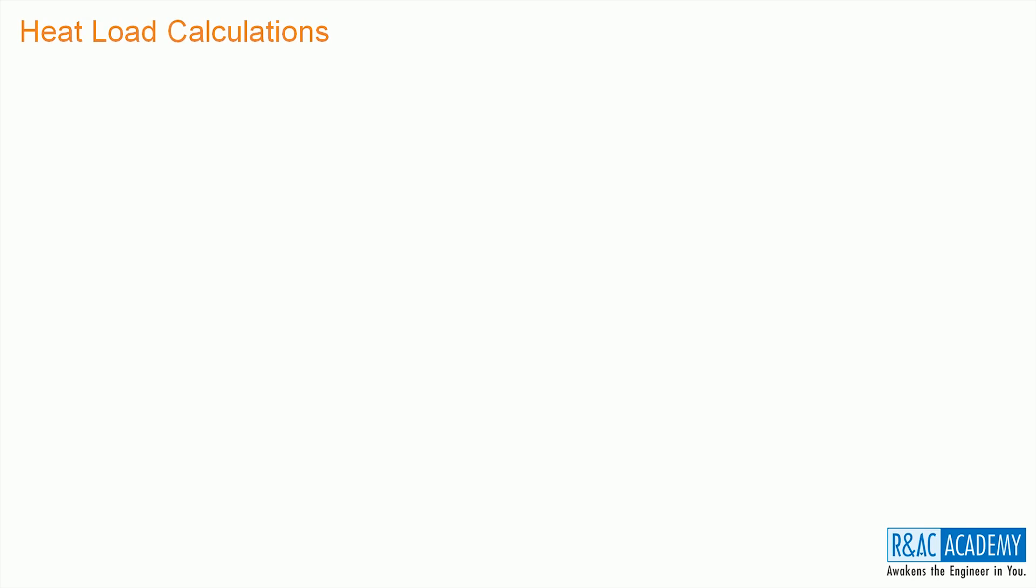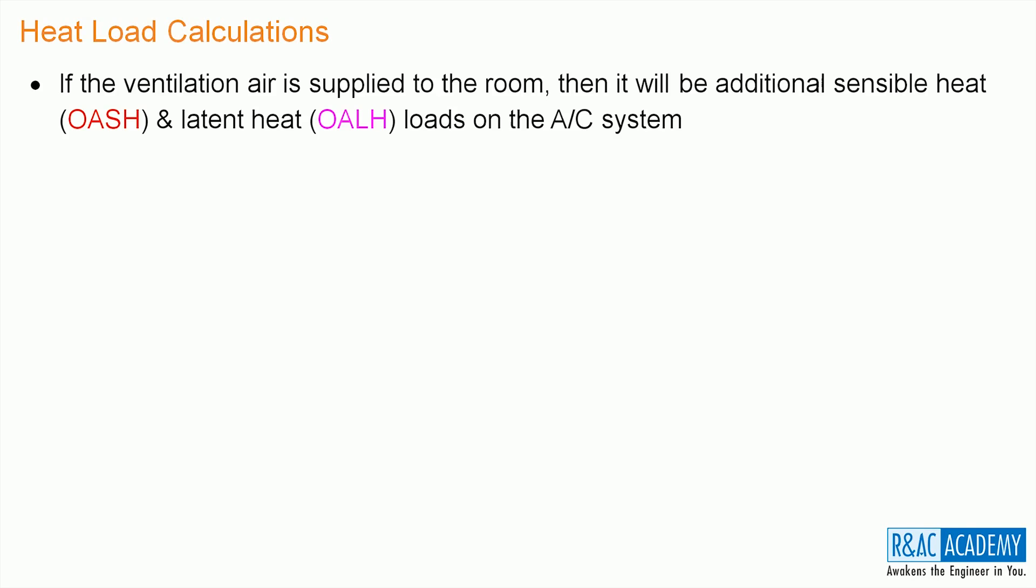Whenever we are taking the outside air or ambient air for ventilation purposes, then it will add sensible heat load OASH and latent heat load OALH to the AC system. OASH equals 0.0204 times CMMO times temperature of the dry bulb temperature of the ambient air minus dry bulb temperature of the room, and this expression gives us the OASH in kilowatts.